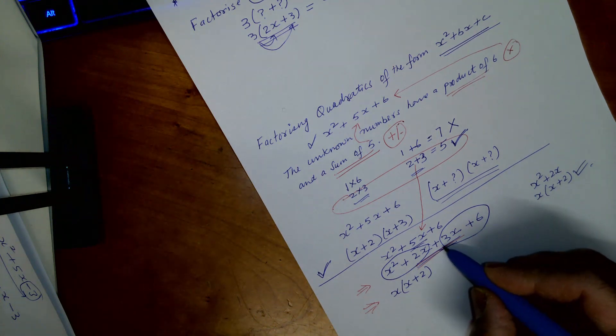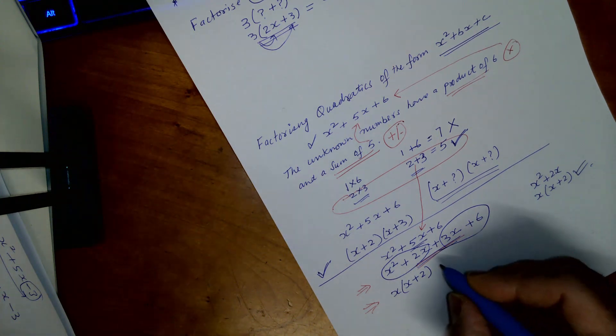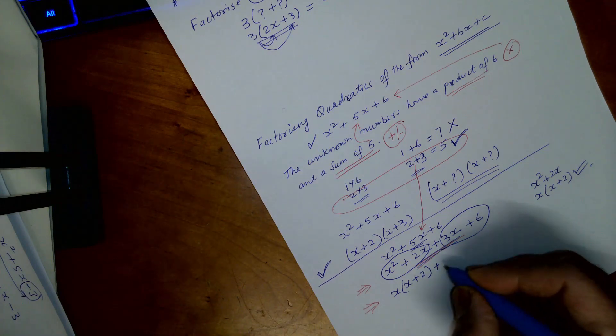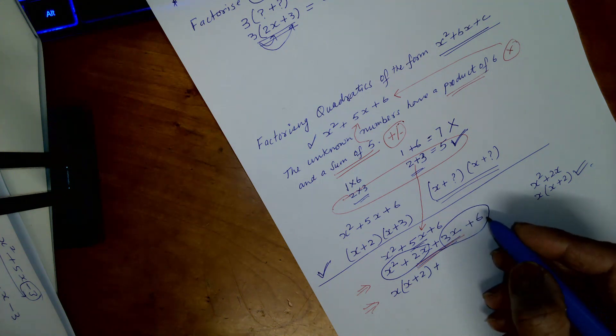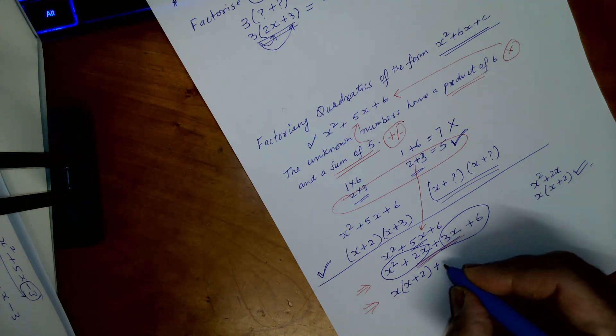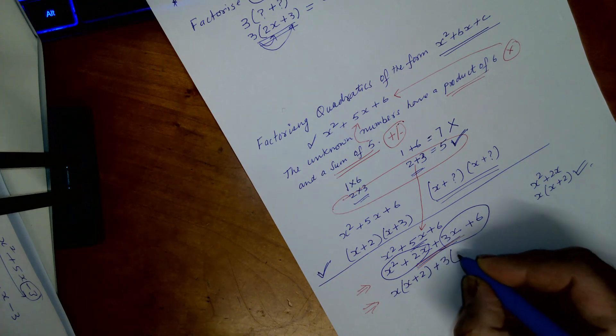Then we go for 3x plus 6. So you have here plus sign. Then again, HCF highest common factor from here, what will be that? That's 3. The bracket x plus 2.